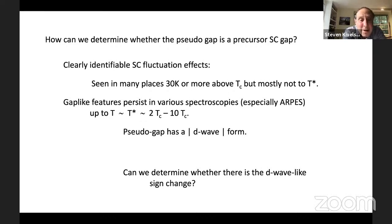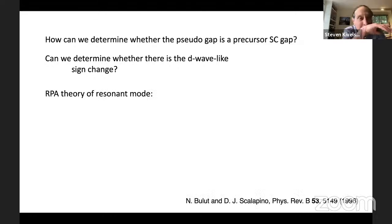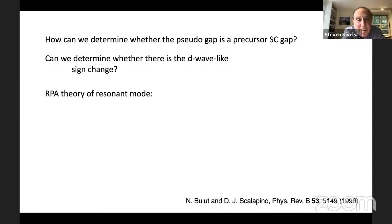Can one determine whether this gap is really D-wave-like in the sense that something is changing sign as one goes from the (π, 0) point to the (0, π) point? In this regard, there has been a recent experiment, and earlier experiments as well, on the so-called resonant mode. The weak coupling theory of the resonant mode, worked out long ago by Bulut and Scalapino and others, says: in the superconducting state, the spin susceptibility at an ordering vector q can have a bound state at an energy shifted down from twice the gap by some small amount due to interactions, and the weight of this mode depends on superconducting coherence factors.